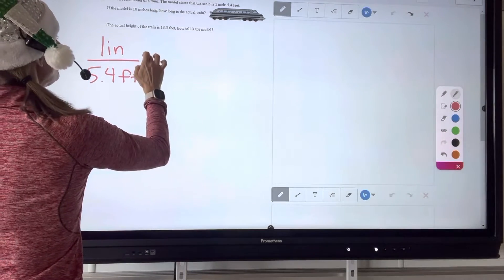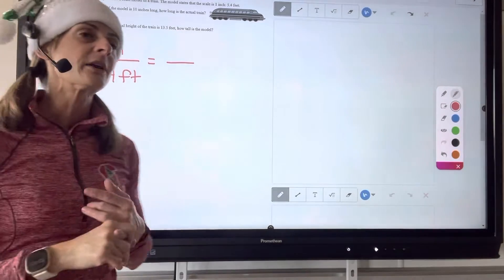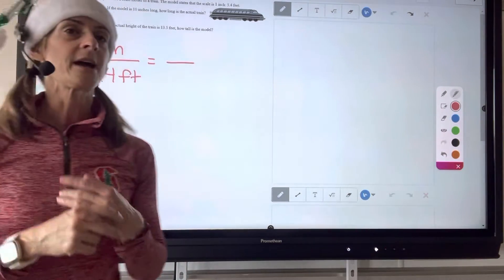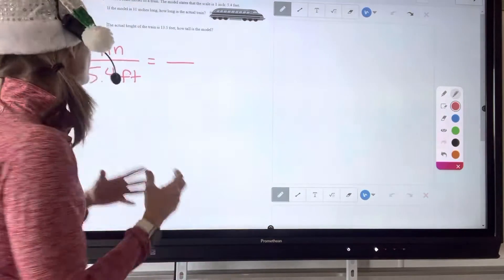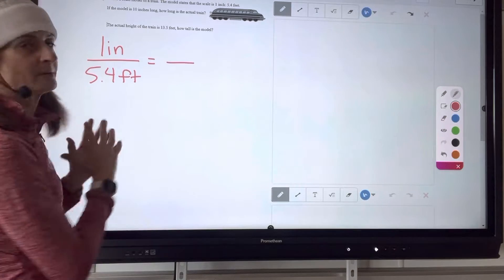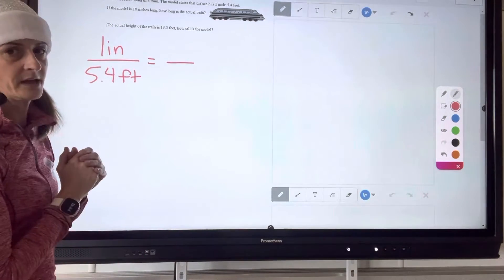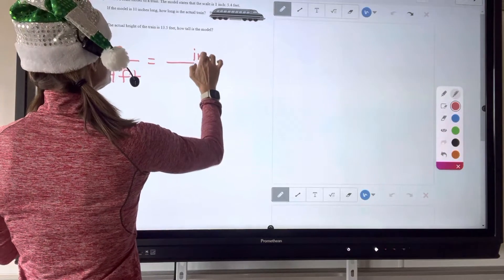Okay, so now there are two questions. If the model is 10 inches long, how long is the actual train? So what we need to do to set up a proportion is we need to make sure the units are the same on both sides. So if we're going to put inches over feet on this side, then on the other side we need to put inches over feet. So I'm going to go ahead and do that, inches over feet.